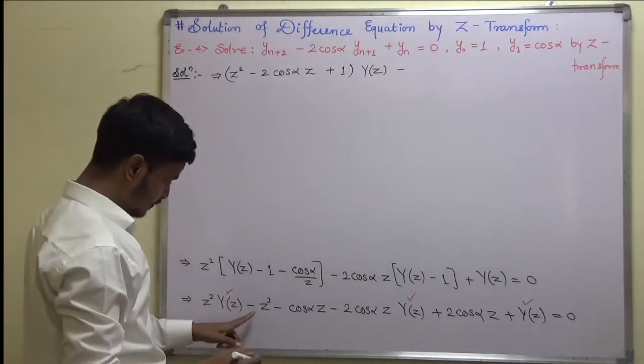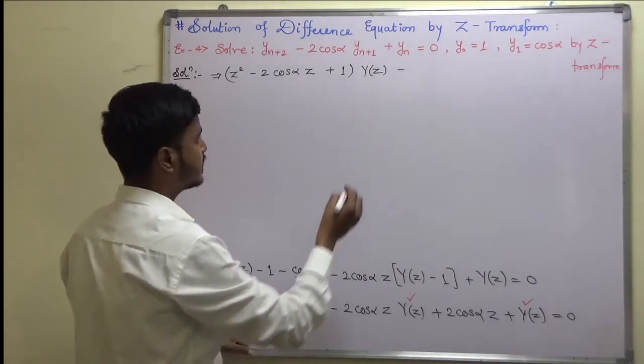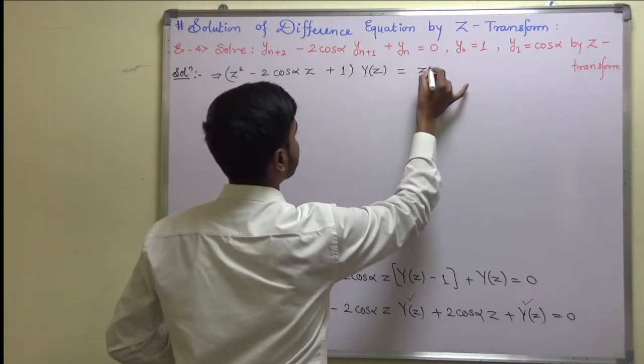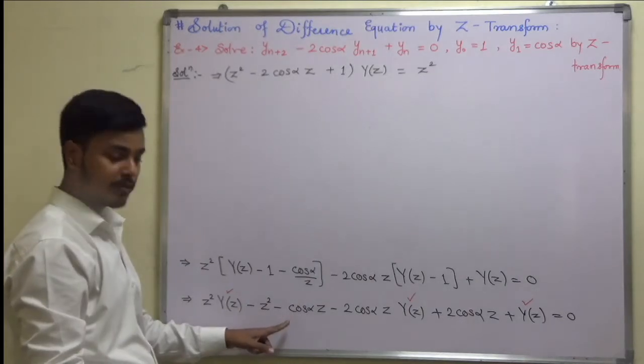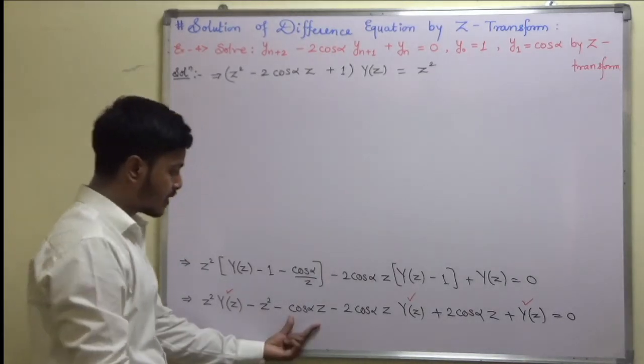When you collect the like terms, what I am having here is z^2, then I am having minus 2cos(alpha)z, then plus 1, and the common term is y(z). Then we have this z^2. I'm taking it to the right, so minus z^2 will become plus z^2.